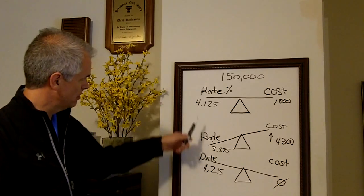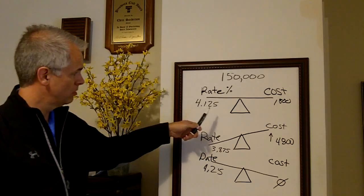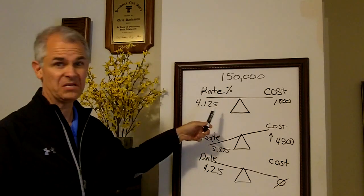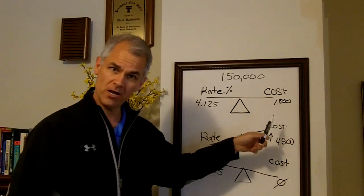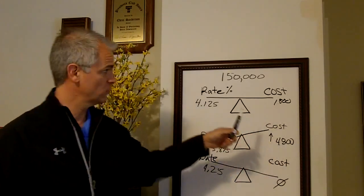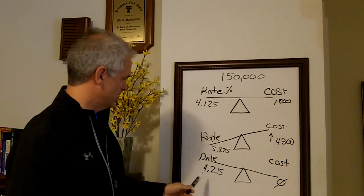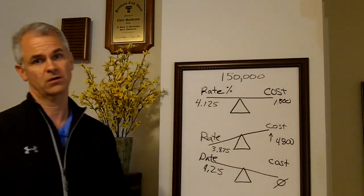Now look, you paid an eighth of a percent more which will cost you on a $150,000 loan about $9 a month, $8, $9 a month. You saved $1,800. Do the math. At $10 a month, that's 180 months it would take you in this new loan to pay for the $1,800 of closing costs.